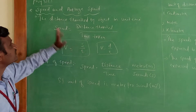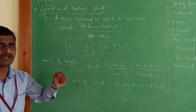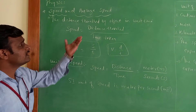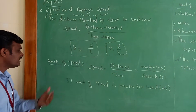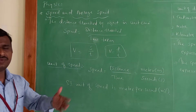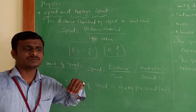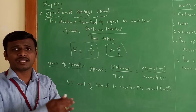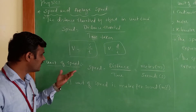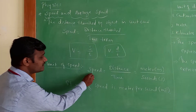Speed means the distance covered by an object per unit time — that is what we call speed. Next, the unit of speed. The SI unit of distance is metre, and the SI unit of time is second. So the SI unit of speed is metre per second.